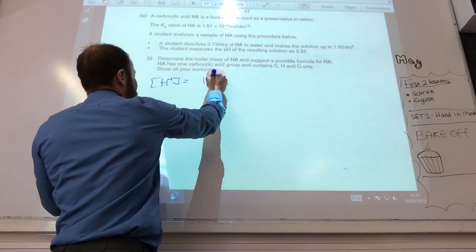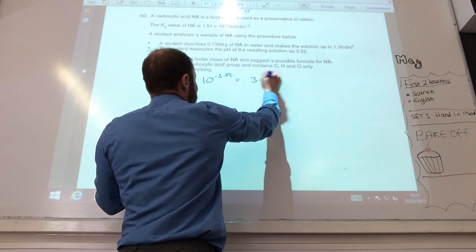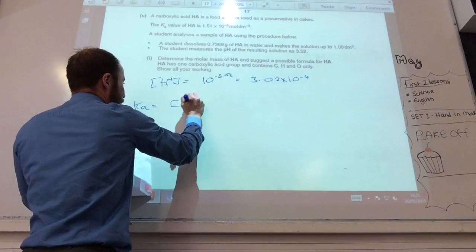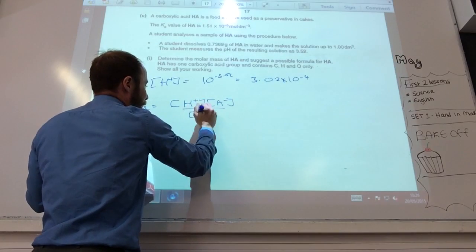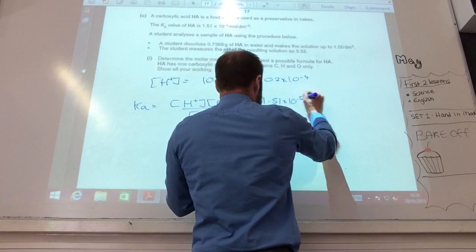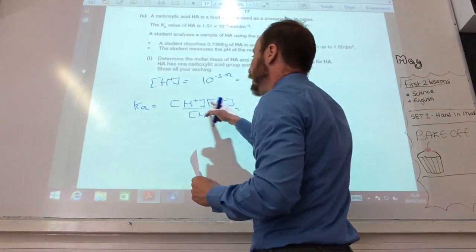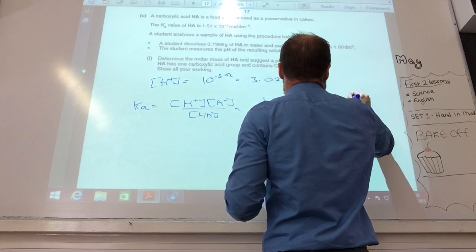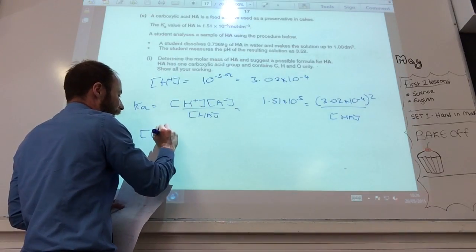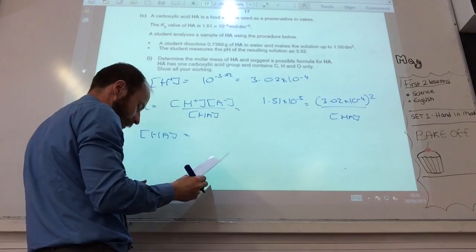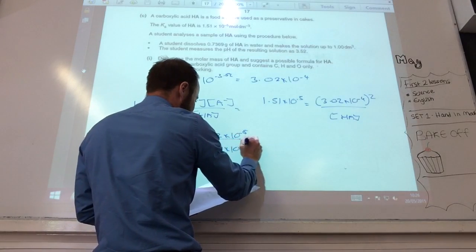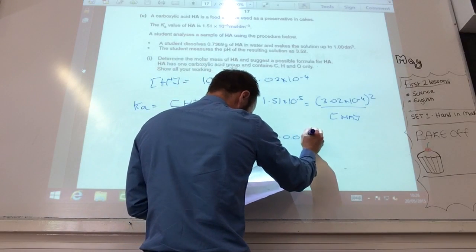So, first of all, you work out your concentration of H+, which is 10^-3.2, which gives me 3.02×10^-4. You know that Ka is H+ times A- over HA. If you bung those numbers in, Ka is 1.51×10^-5. We assume that that is the same. So, that equals 3.02×10^-4 squared over your concentration of HA.